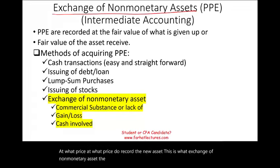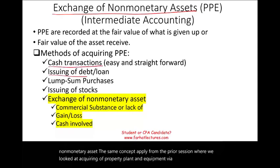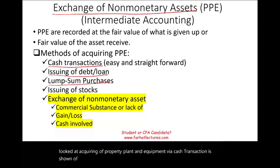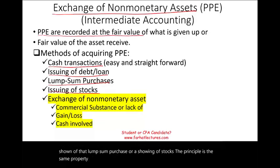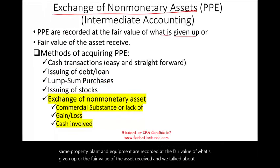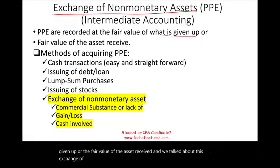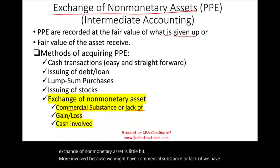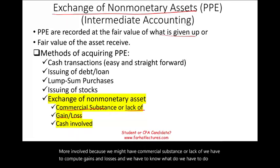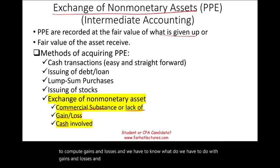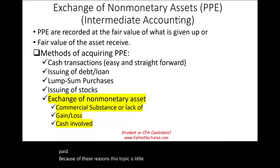The same concept applies from the prior session where we looked at acquiring property, plant, and equipment via cash transaction, lump sum purchase, or issuing of stocks. The principle is the same — PP&E is recorded at the fair value of what's given up or the fair value of the asset received. Exchange of non-monetary assets is more involved because we might have commercial substance or lack thereof, we have to compute gains and losses, and sometimes cash might be involved, either received or paid. Because of these reasons, this topic is a little challenging for most students.